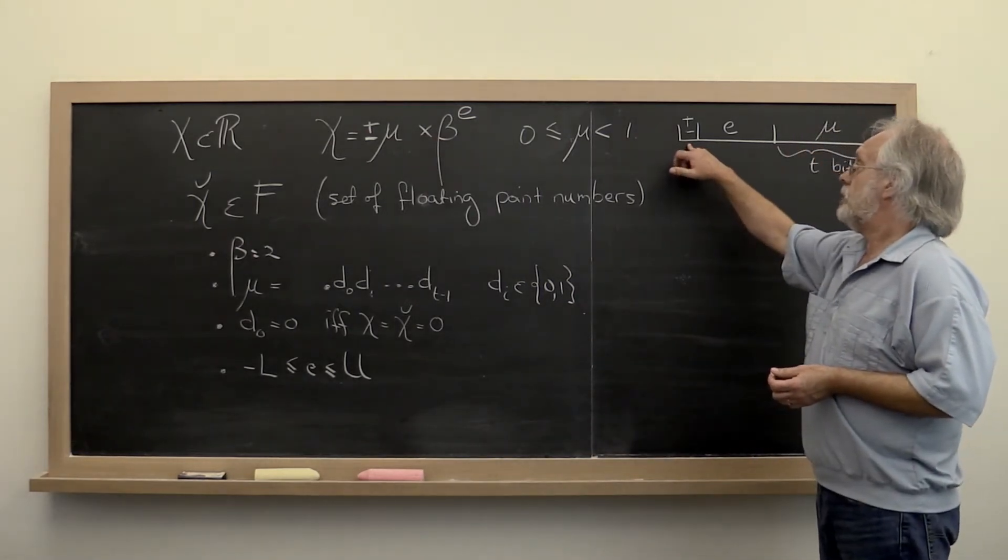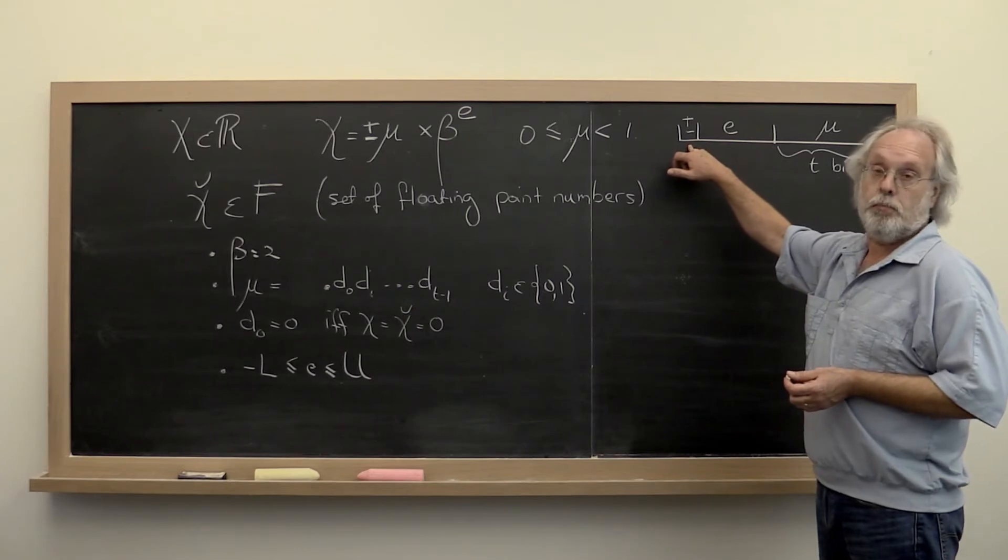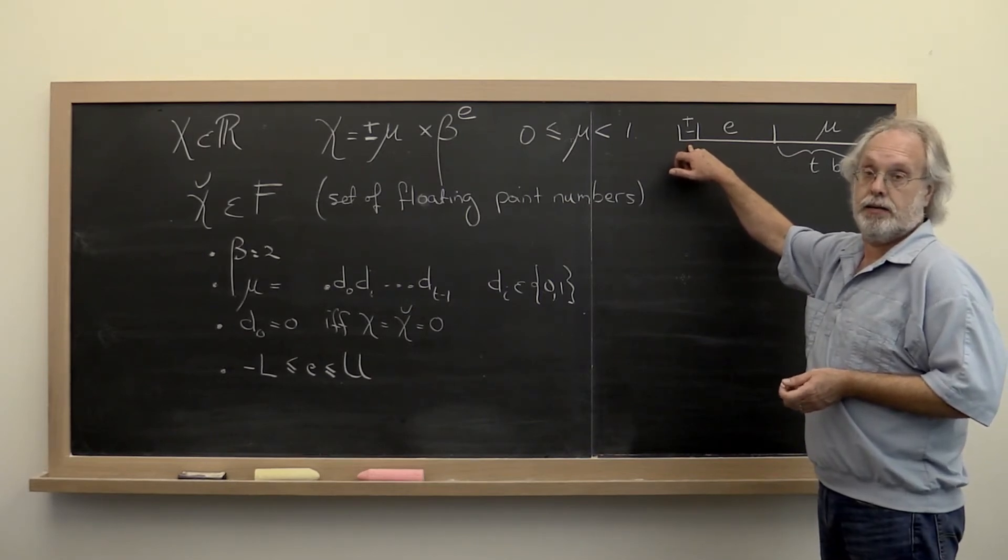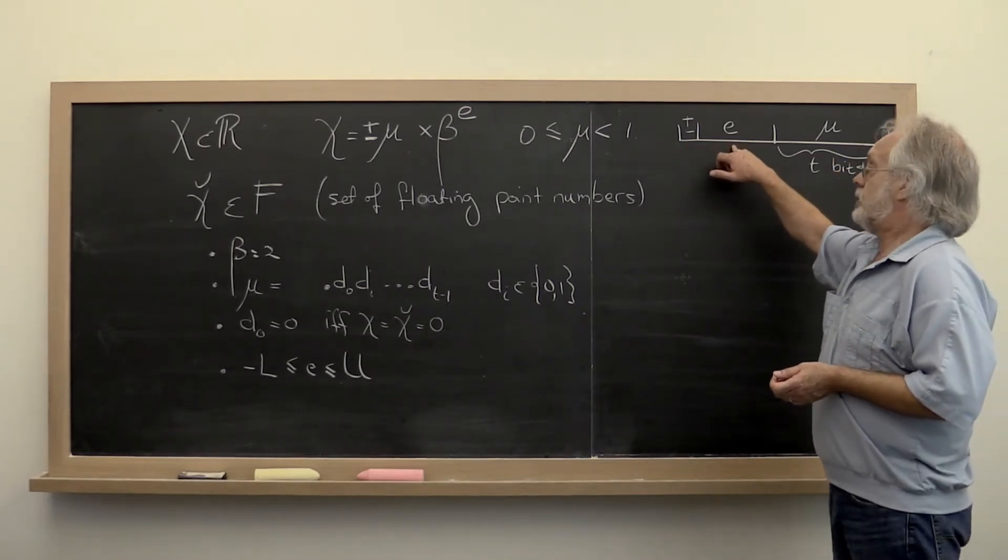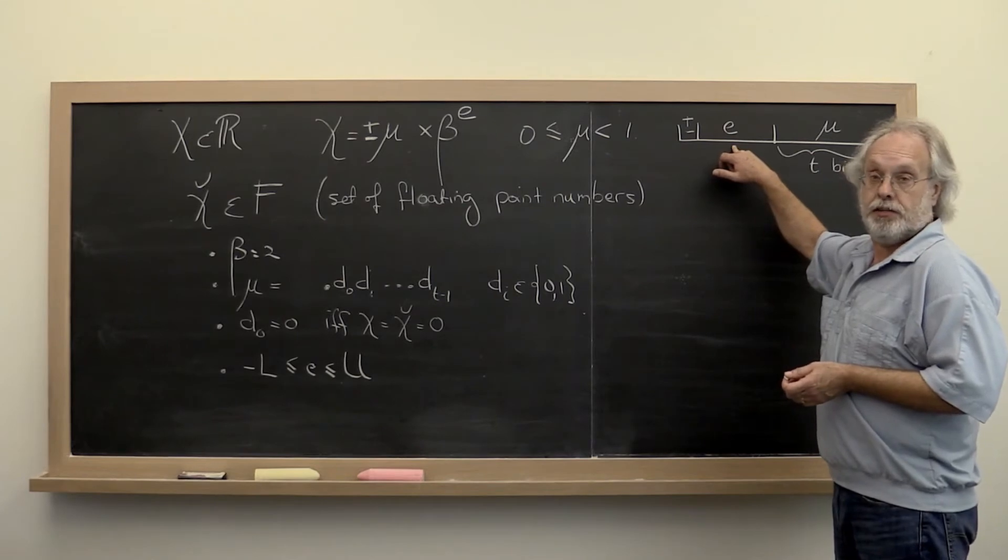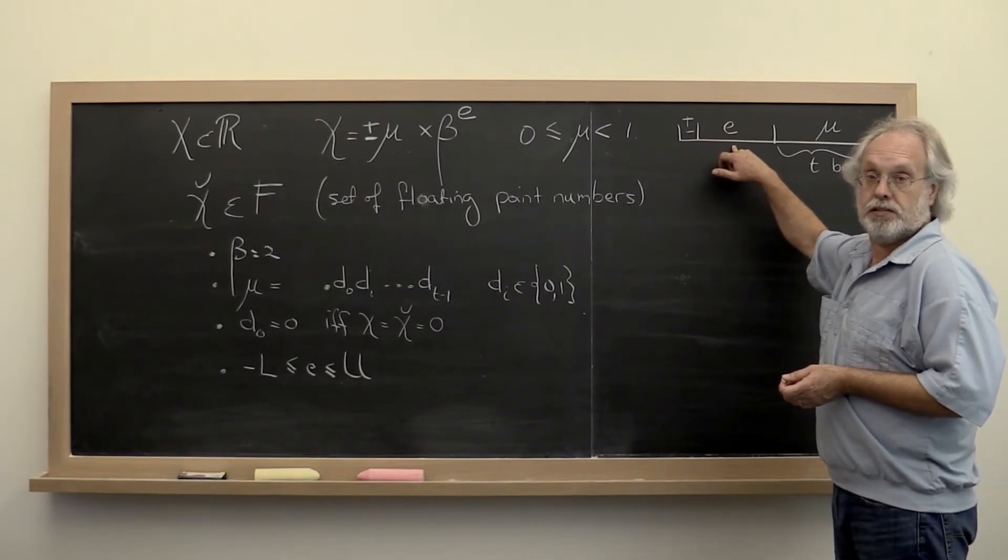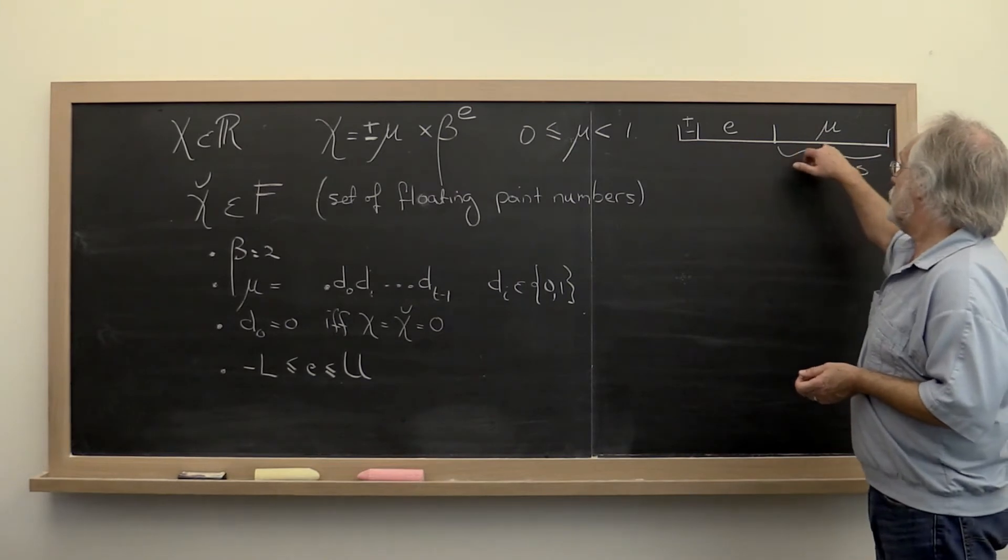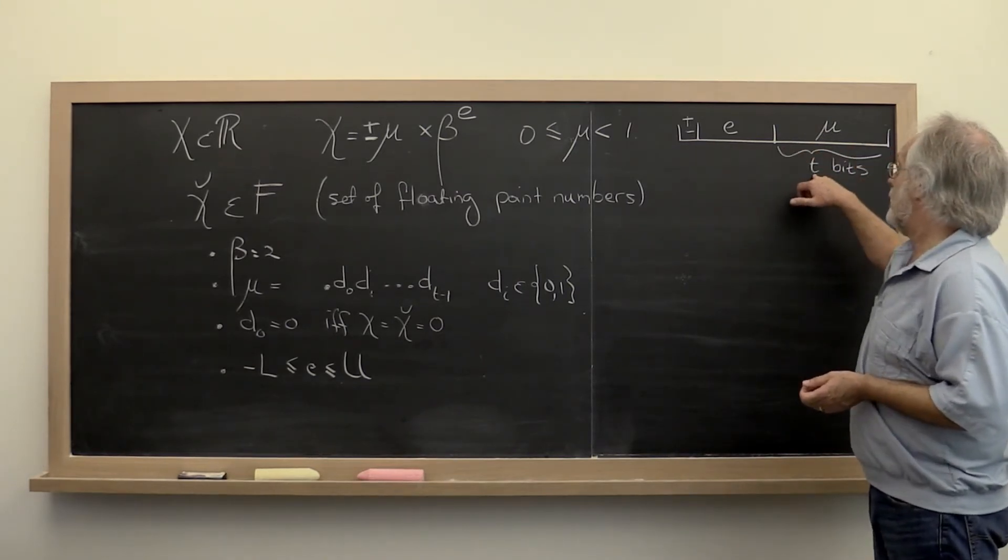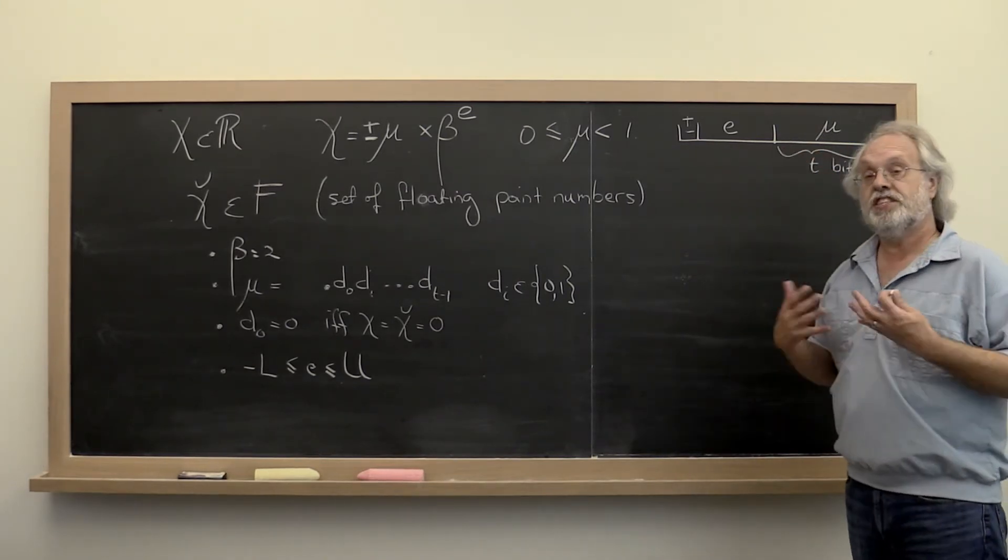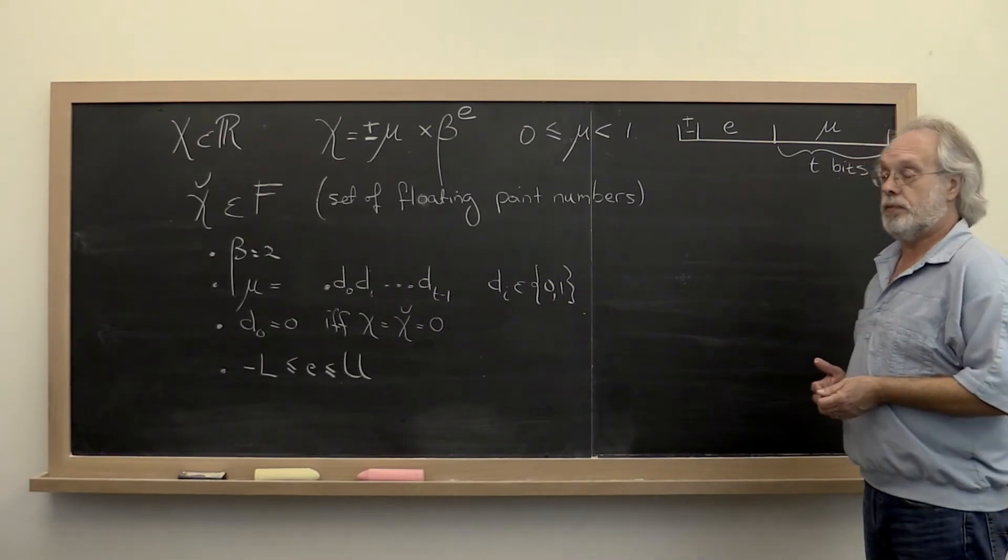Either implicitly or explicitly we need one bit to indicate the sign. We then take a certain number of bits to indicate the exponent, the integer that represents the exponent. And then we're left with a certain number of bits. In our case we're going to say we have t bits left to store the mantissa.